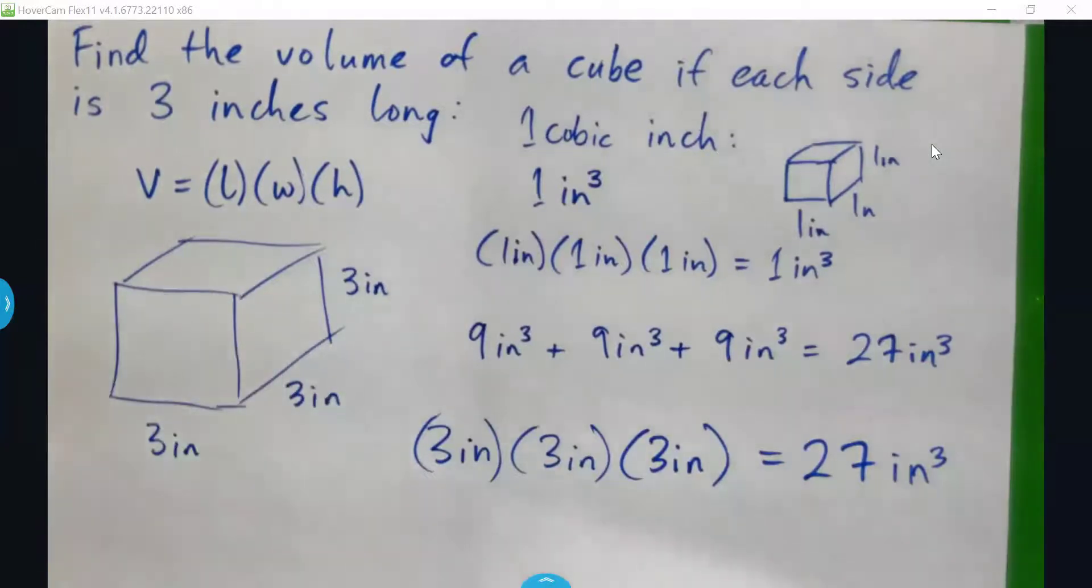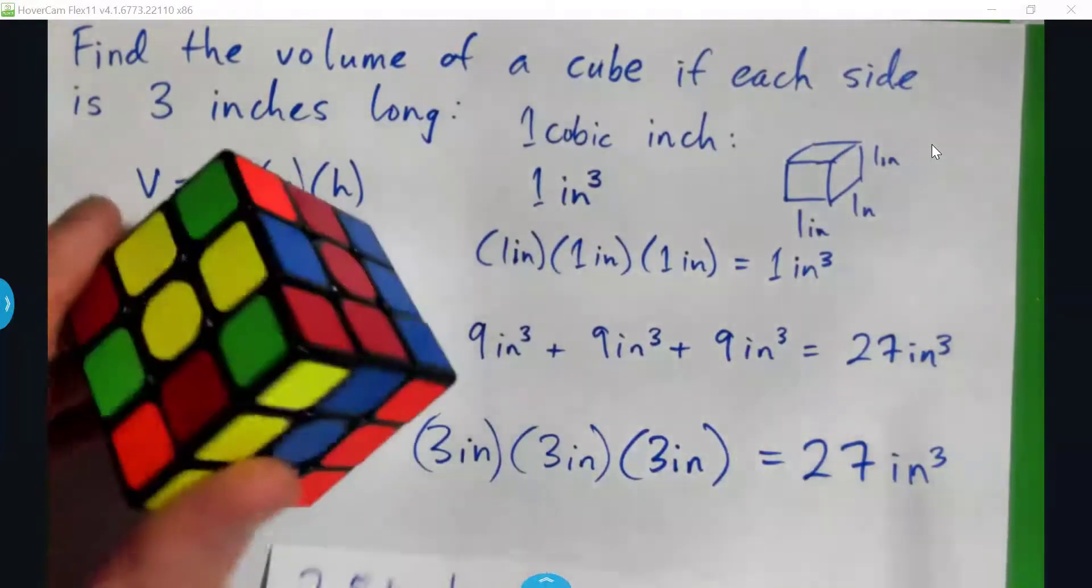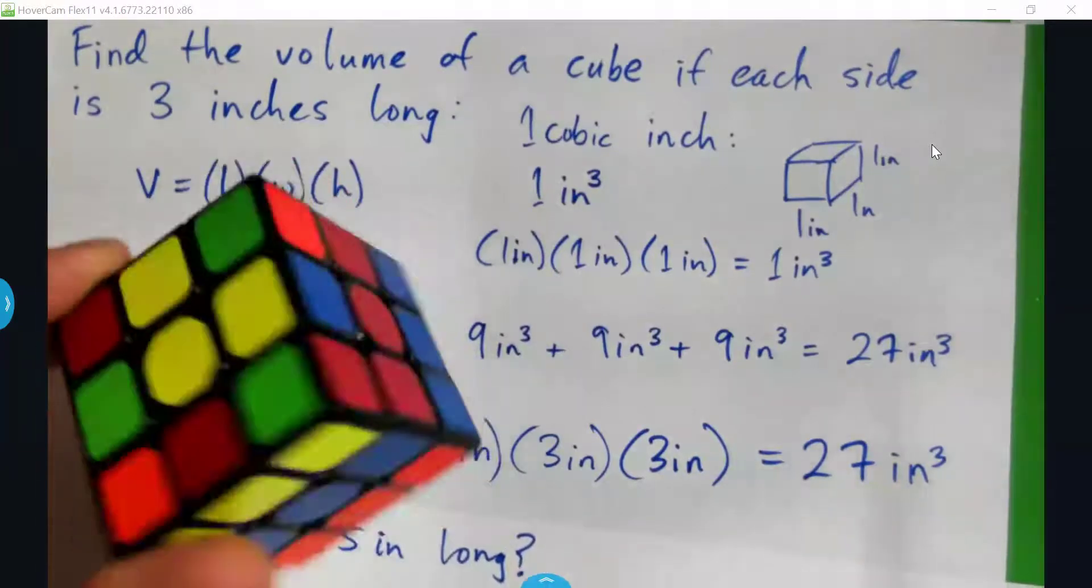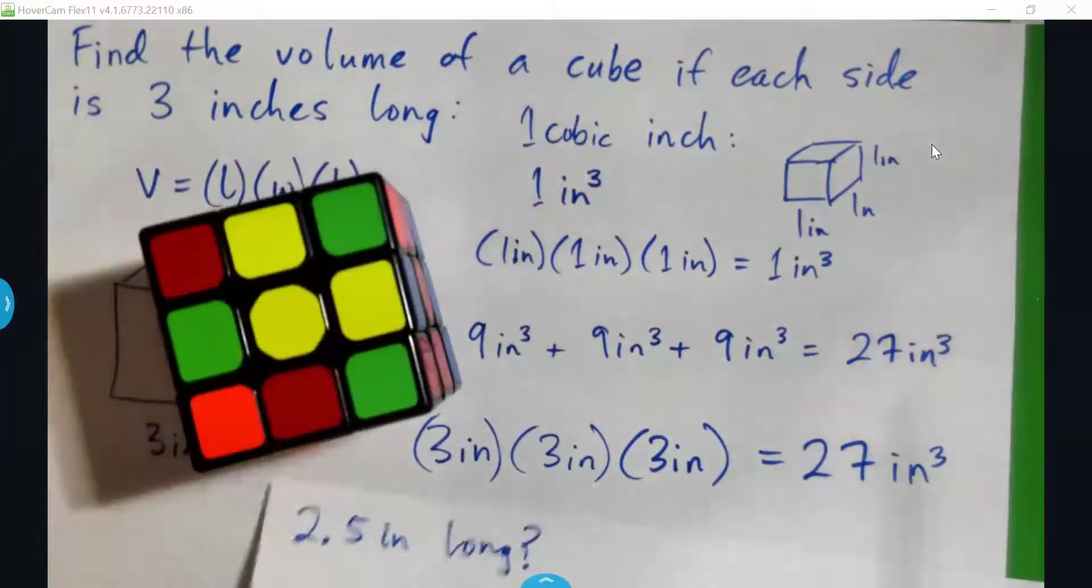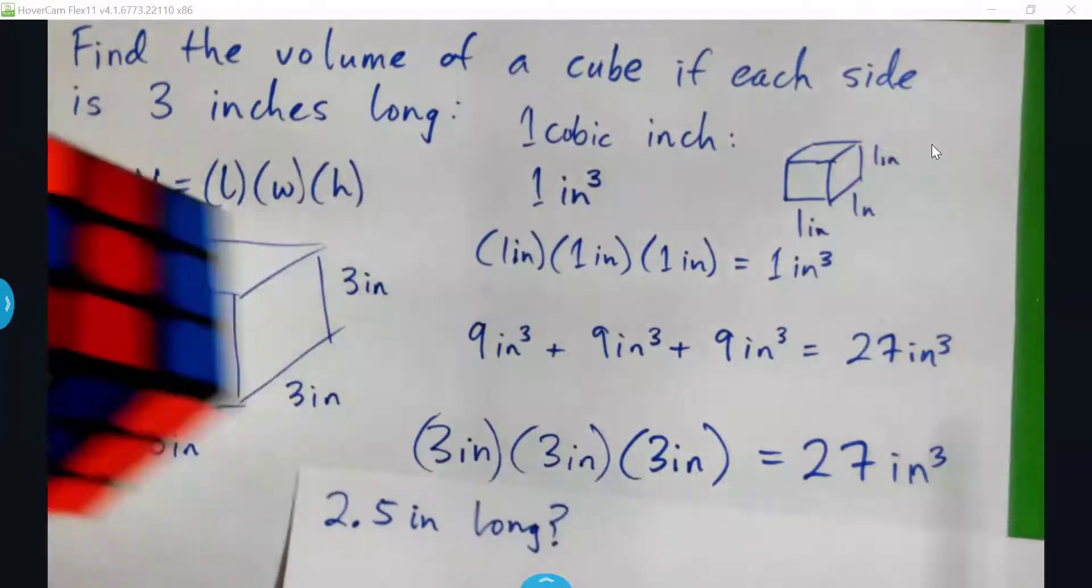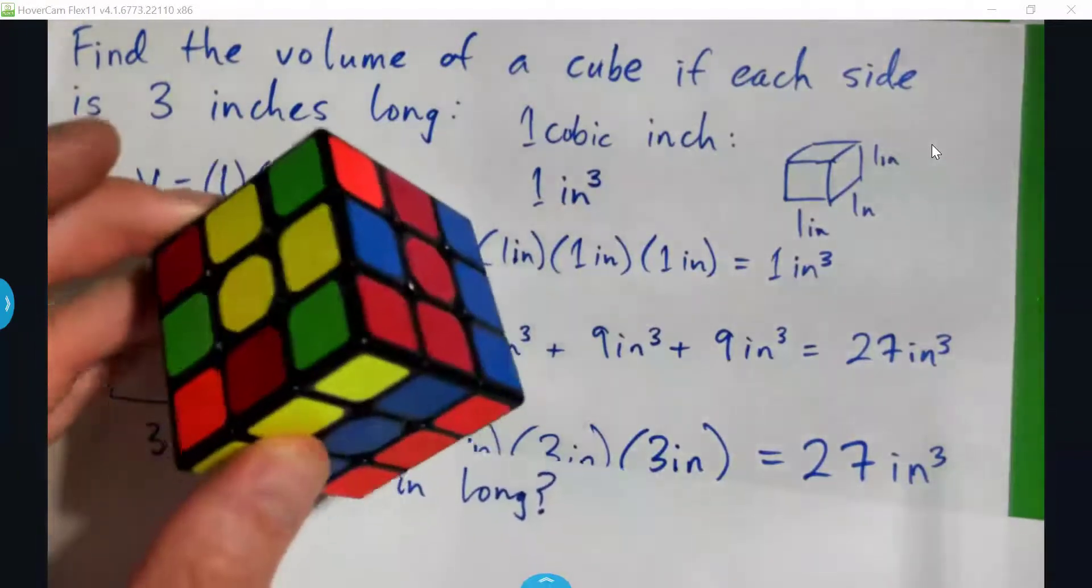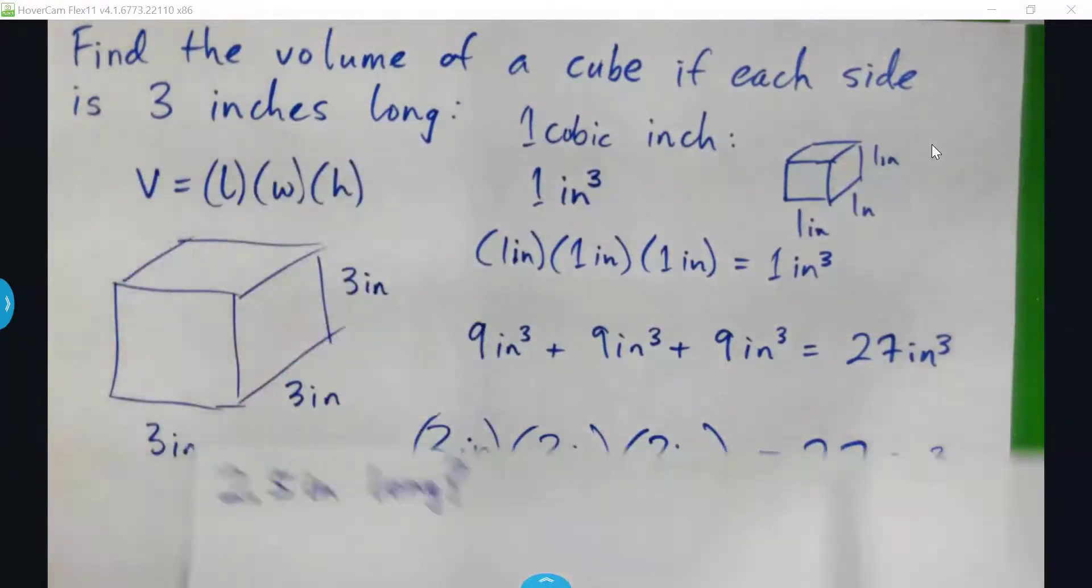But if we're given something like 2.5 inches, instead of having a beautiful Rubik's cube where we can count each one, we have parts of a cubic inch to deal with. And so it's not going to be as cool to look at. But we can still use the formula,